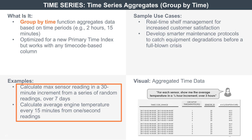For example, you may have a series of sensors that generate readings at varying time intervals. Some sensors may create a reading every 30 seconds, some every few minutes, others every hour. Using the time series aggregate function, you can easily calculate average and maximum temperatures of each sensor in 30-minute increments for data that covers a specific day.